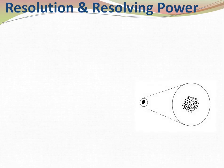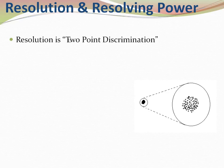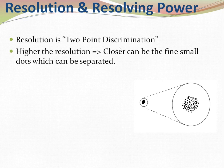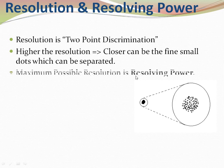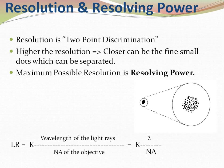Resolution is two-point discrimination — if we can differentiate between two points, that stands for resolution. The closer two points can be while still being distinguished as separate, the finer the resolution. Maximum possible resolution is the resolving power. The limit of resolution is a ratio of the wavelength of light to the NA of the objective being used.